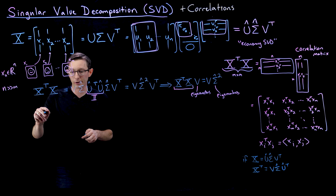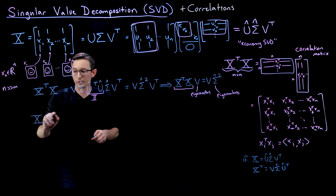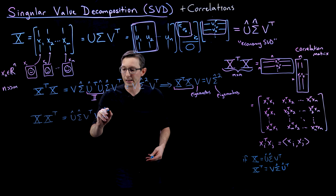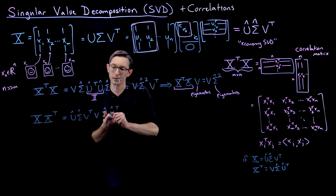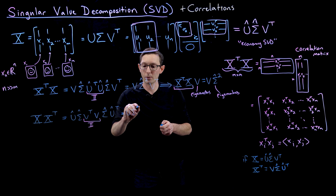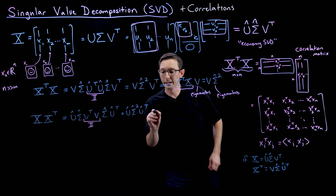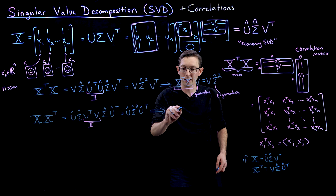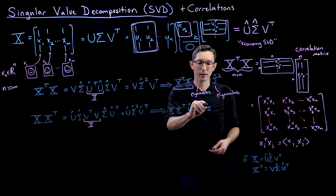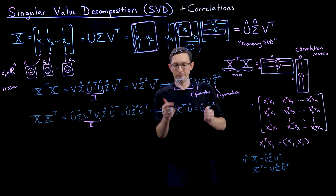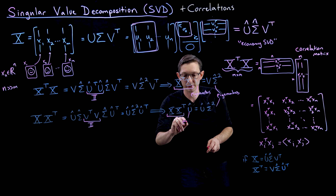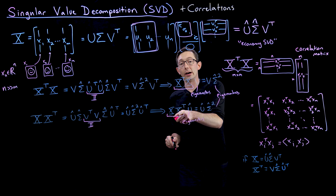We can do the same thing with the transpose version. Taking X X^T = Û σ̂ V^T · V σ̂ Û^T. The V^T V cancels to the identity, giving Û σ̂² Û^T. Written as an eigendecomposition: X X^T · Û = Û σ̂². The sigma squareds are the exact same eigenvalues as before, and the left singular vectors in Û are the eigenvectors of this row-wise correlation matrix.